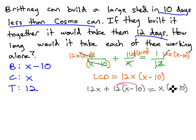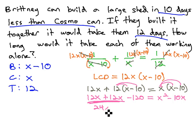We can start solving by doing a little distributing to get 12x plus 12x minus 120 equals x squared minus 10x. Combine like terms to get 24x minus 120 equals x squared minus 10x.